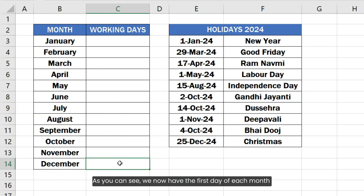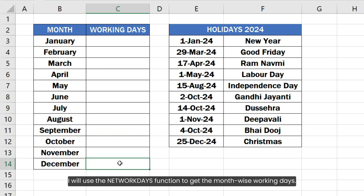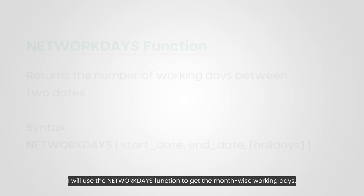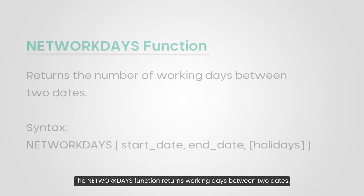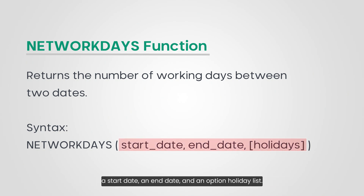As you can see, we now have the first day of each month formatted as month name. I will use the NETWORKDAYS function to get the month-wise working days. The NETWORKDAYS function returns working days between two dates. This function accepts three arguments: a start date, an end date, and an optional holiday list.